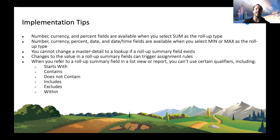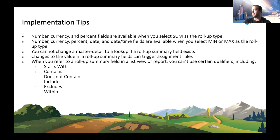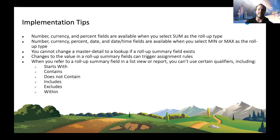If you have a roll-up summary field, you cannot change that relationship from master-detail to lookup — it has to remain as a master-detail. Also, changes to the value in a roll-up summary field can trigger assignment rules. For example, if you have a roll-up summary showing the total cost of products on an account, and that cost goes above a threshold, you can assign it to a manager or trigger some process.